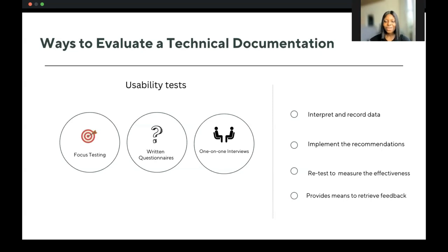You can also consider a written questionnaire usability test, where you write a series of surveys and send them out to users who have gone through the documentation — asking about their experience, what was wrong with the documents, and how it can be improved. Using that survey feedback, you can work toward improvements. Another way is through one-on-one interviews — a 30-minute to one-hour call going through the documentation, hearing from users directly about their experience and what could be done to improve it.